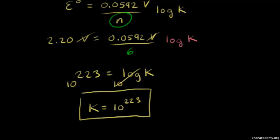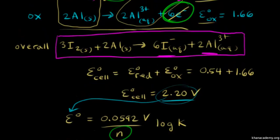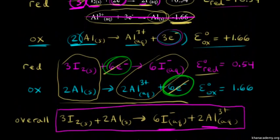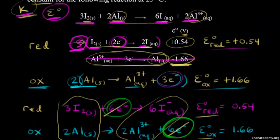We get a huge value for the equilibrium constant, which is a little surprising because we only had 2.20 volts — that doesn't sound like much. But from only 2.20 volts, we get a huge number for the equilibrium constant, meaning the reaction goes to completion. With a huge value for K like that, you pretty much don't have anything for the reverse reaction, which is why there's no arrow going backwards — only a forward arrow.